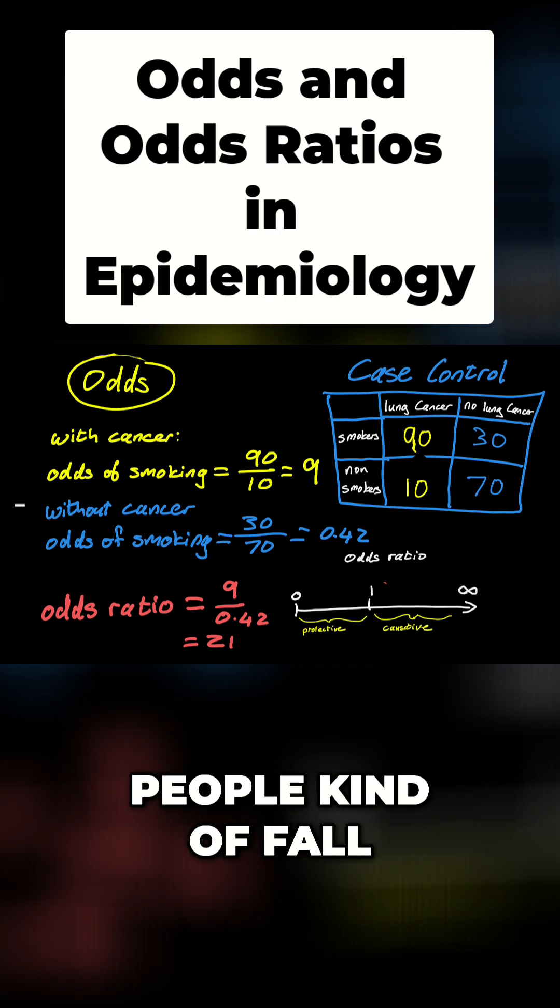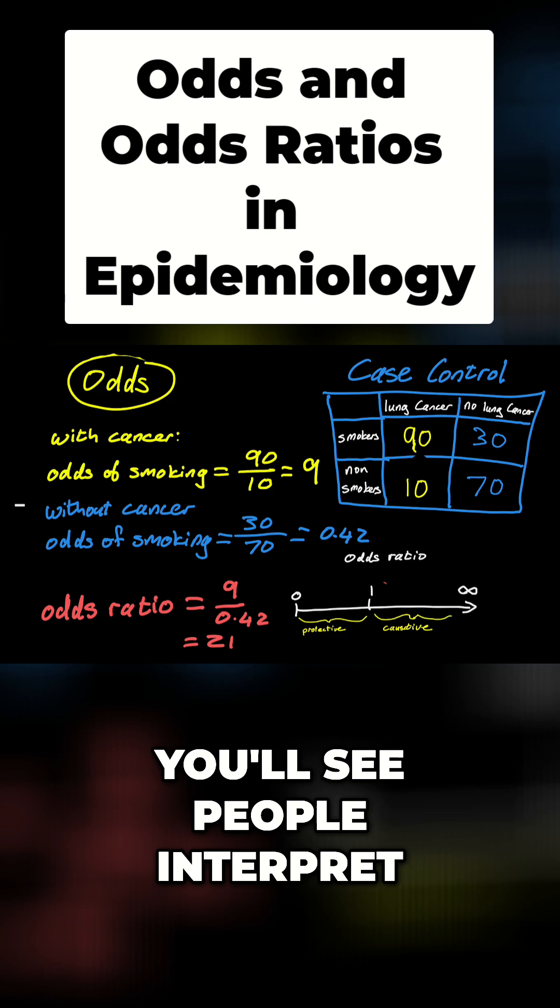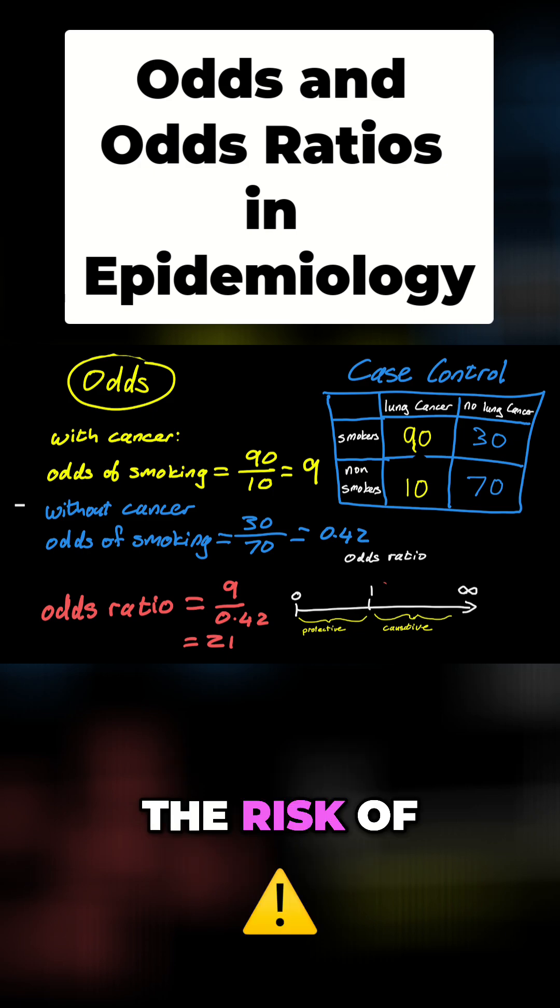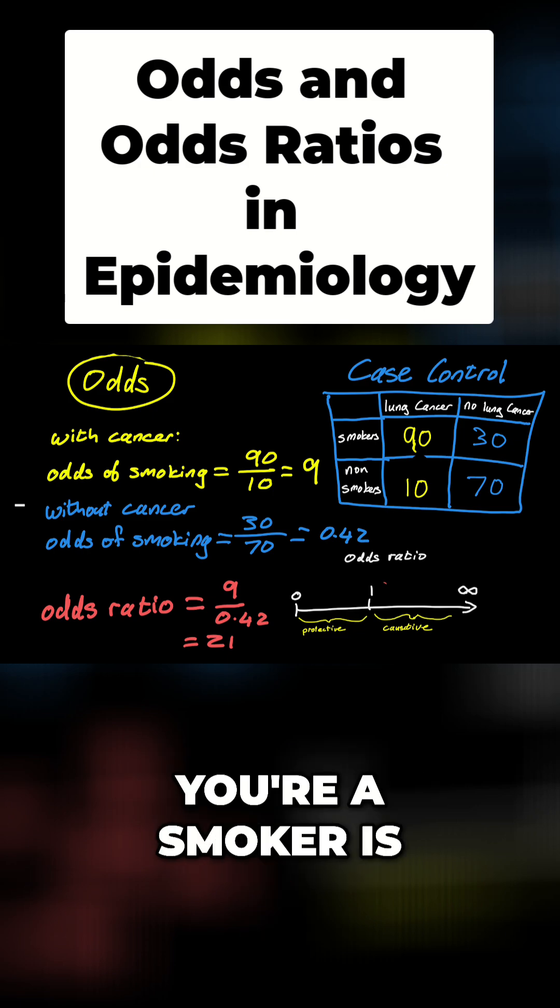The tricky thing here, and this is where people kind of fall apart a little bit, is how do we interpret that 21? Very often you'll see people interpret it as, well, the risk of getting lung cancer if you're a smoker is 21 times more. That is not correct.